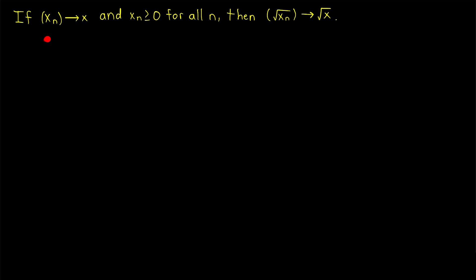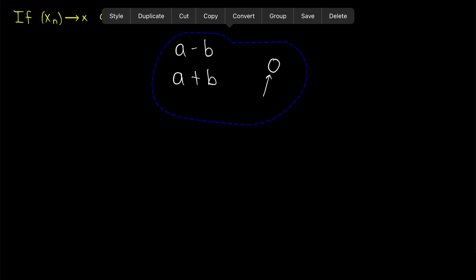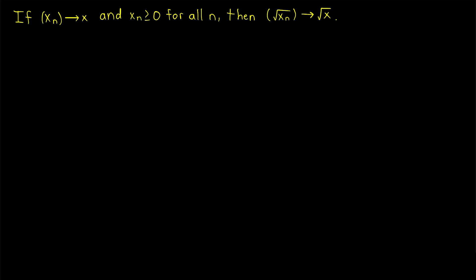I recommend trying to prove this yourself before watching the rest of the lesson — it's a pretty good medium difficulty exercise. If you want a couple of hints: consider conjugates. The conjugate of an expression like a minus b is a plus b. My other hint is to consider zero on its own. With those hints, hopefully you're able to make some ground and maybe even prove it yourself.